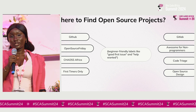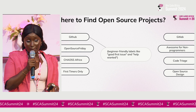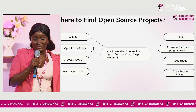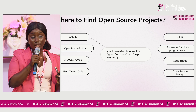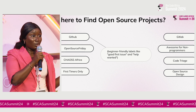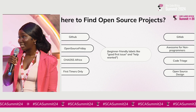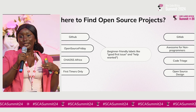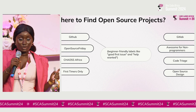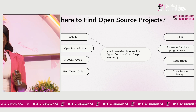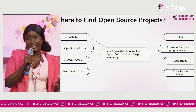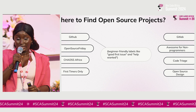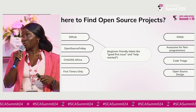Where do you find open source projects? One good place is GitHub — it's the most highly recommended place to find them. If you go to GitHub and search 'good first issues' or 'help wanted,' you'll find open source projects you can easily start contributing to as a beginner. Other resources include Open Source Friday, GitLab, Awesome for Non-Programmers, CHAOSS Africa, Code for Edge, First Timers Only, and Open Source Design.